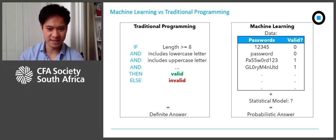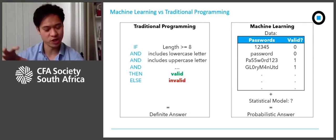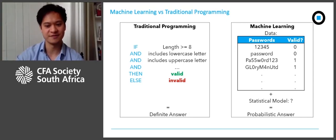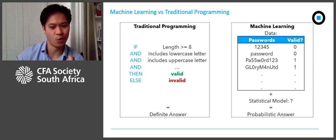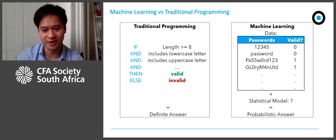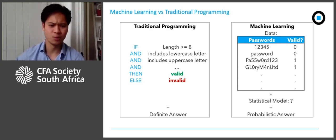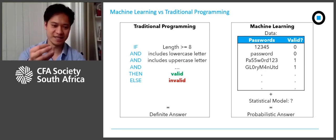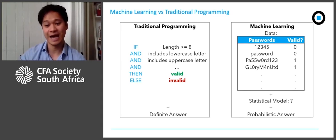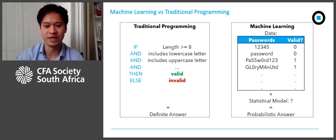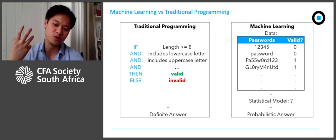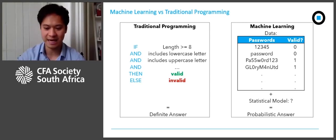If you combine all of this data with a statistical model, you get a probabilistic answer for whether the password you entered is valid or not. In this simple example, getting a definite answer is better than a probabilistic one, since we have clear rules and prefer a black-and-white answer. So the traditional programming approach makes more sense here. But most problems do not have easy-to-code rules like this — often the exact rules are not always clear or known in advance. And why machine learning has become more popular recently is the explosion in the availability of data to train these algorithms.